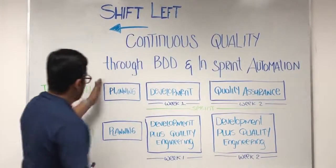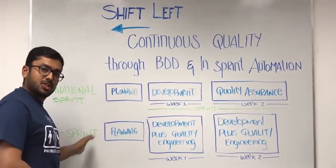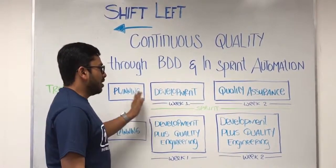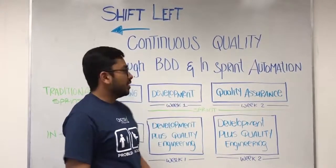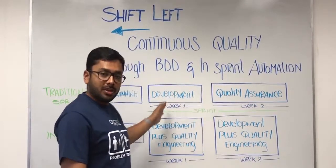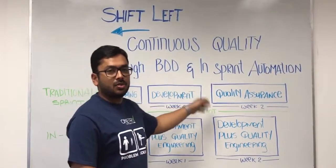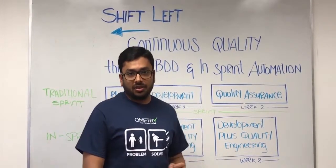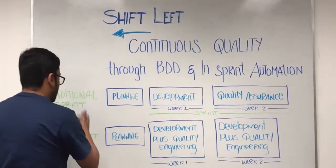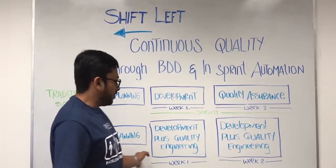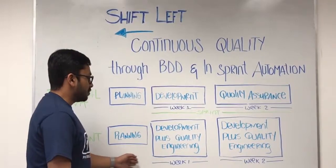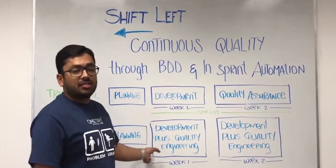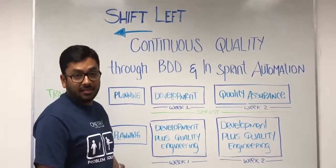At the beginning of the sprint, in both the traditional as well as in-sprint, we have the sprint planning phase. Once the sprint planning is done, in our traditional sprint, say if it's a two-week sprint, it's a staggered approach where our development team starts working in week one and towards the later part of week one, the QA team will start working on QA activities. Whereas when we talk about in-sprint testing, as soon as the planning phase is done, or even during the planning phase, you involve the QA or quality engineering team, which can give you insightful data points right from the planning phase of the sprint itself.